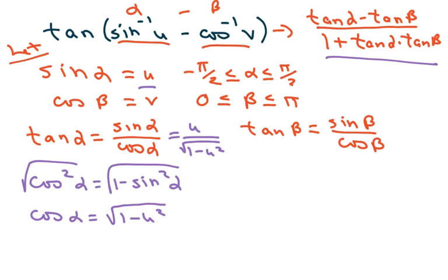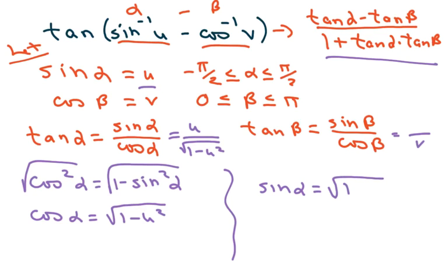For tan(β), cosine(β) = v. Doing the same thing for sine, we get sine(β) = √(1 - v²). So tan(β) = √(1 - v²) over v, since the sine is in the numerator.